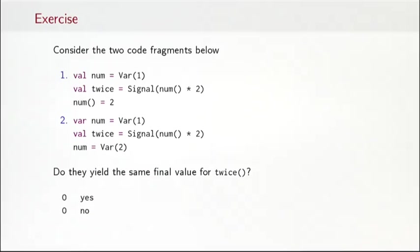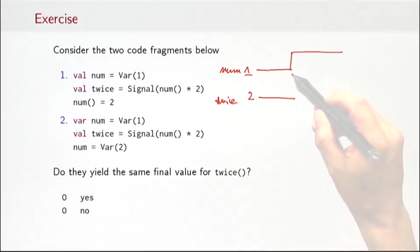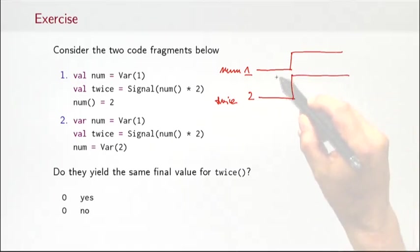So let's visualize how these two code fragments behave. In the first case, I have the num signal, which is constant one, and the twice signal, which is constant two. Then, at some point, I change num to two. And twice will, consequently, jump to four. So that's the update of the first code fragment.